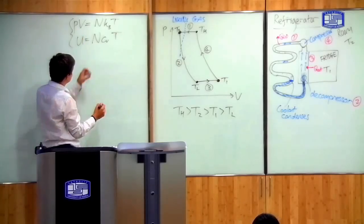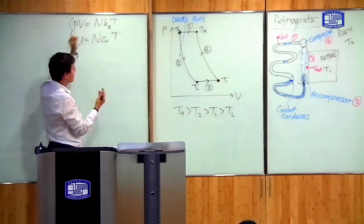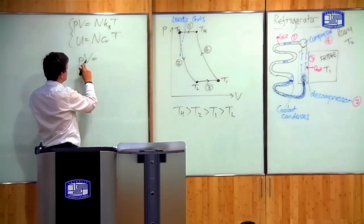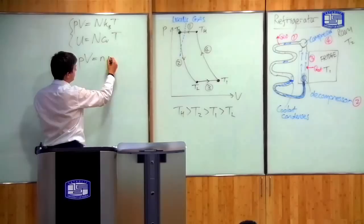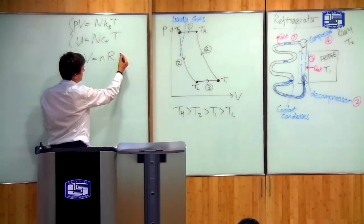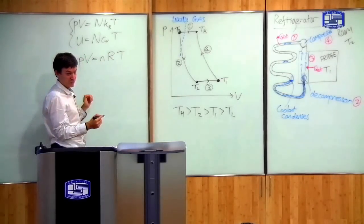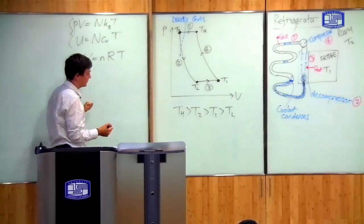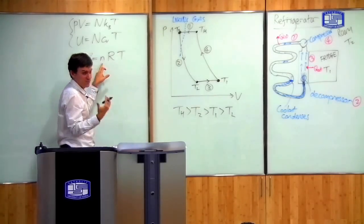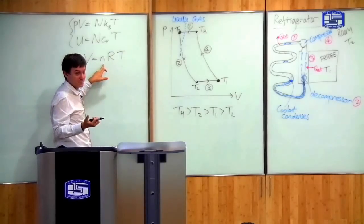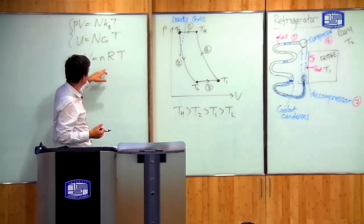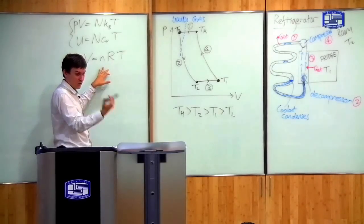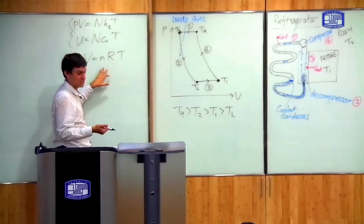Firstly, I said instead of using the number of particles, you can use something called a mole. So you could write, for example, the first equation as equal to the number of moles times something called the molar gas constant times the temperature. And the number of moles is the atomic weight of the substance in grams.